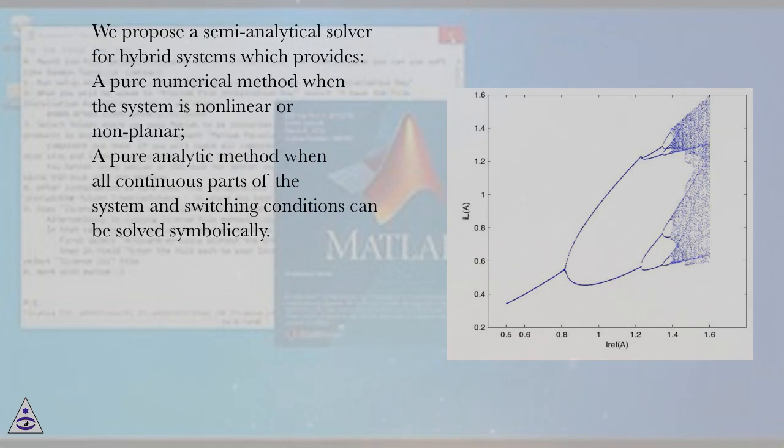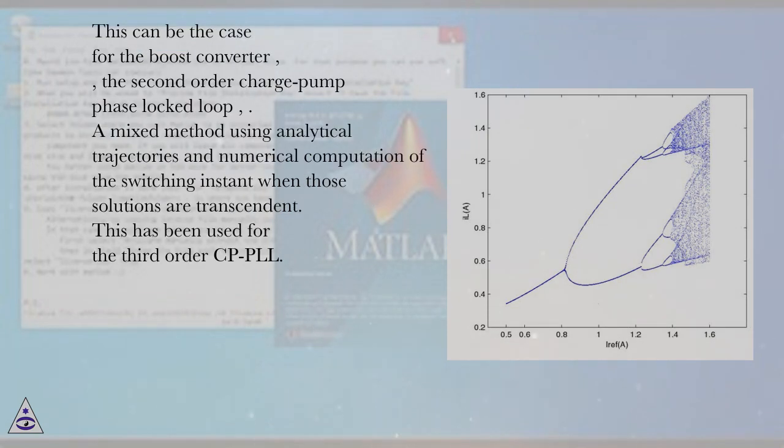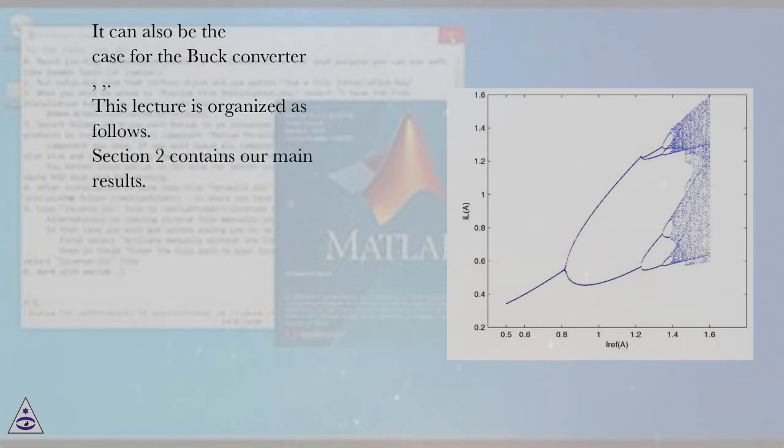We propose a semi-analytical solver for hybrid systems which provides: a pure numerical method when the system is nonlinear or non-planar; a pure analytic method when all continuous parts of a system and switching conditions can be solved symbolically. This can be the case for the boost converter, the second-order charge-pump phase-locked loop. A mixed method using analytical trajectories and numerical computation of the switching instant when those solutions are transcendent. This has been used for the third-order CPPLL. It can also be the case for the buck converter.